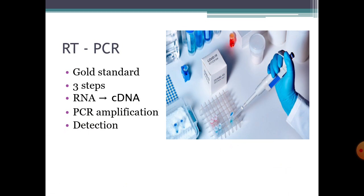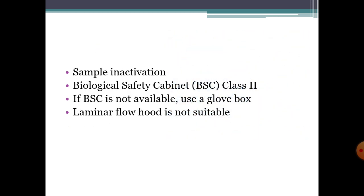RT-PCR is considered the gold standard for COVID-19 testing. This test can amplify a tiny amount of viral RNA in three steps: conversion of viral RNA into complementary DNA, then PCR amplification, and finally detection. Sample inactivation should be done in a biological safety cabinet, BSC class 2. If BSC is not available, use a glove box. Laminar flow hood is not suitable for this purpose.